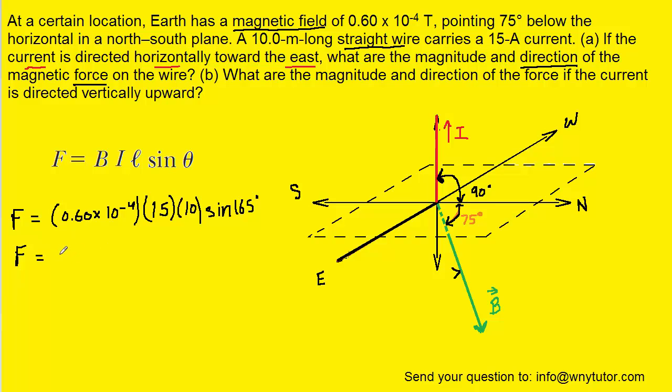We see the magnetic force is approximately 2.3 times 10 to the minus 3 newtons. So that's the correct magnitude. We need the direction as well.